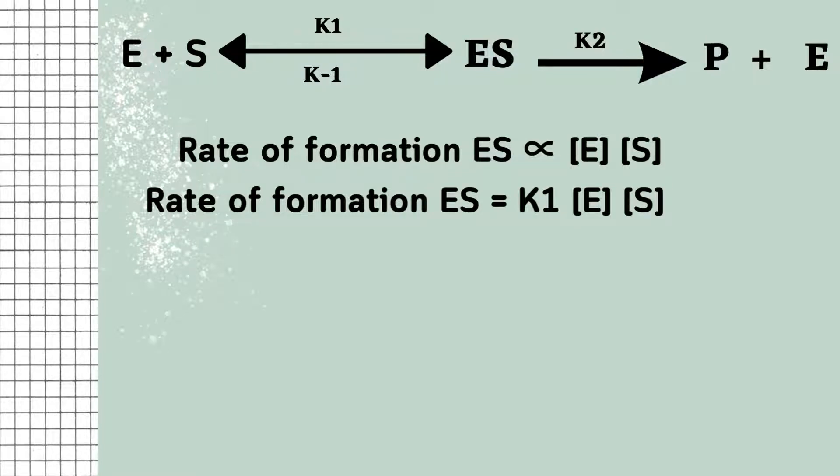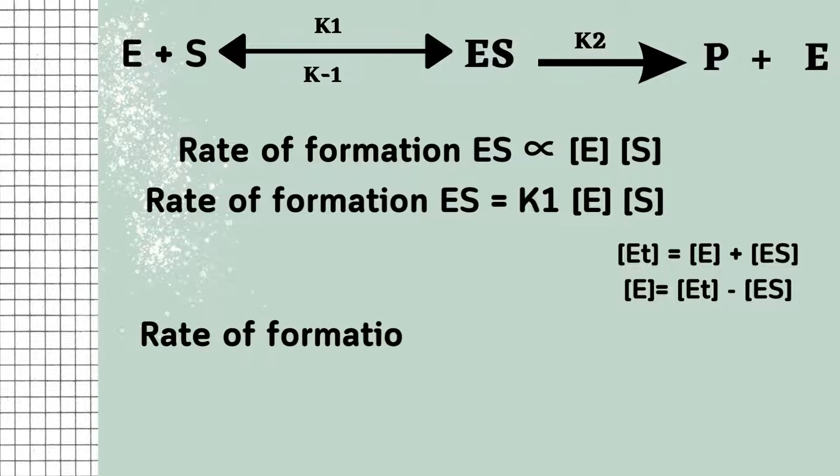In the reaction, enzymes are either in the form of free enzymes or bound forms. So enzyme total is equal to concentrations of free enzyme E and bound enzyme ES. Concentration of free enzyme is obtained from this relationship. The rate of breakdown of ES complex is equal to K-1[ES] + K2[ES].